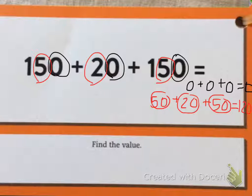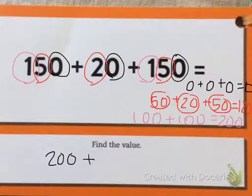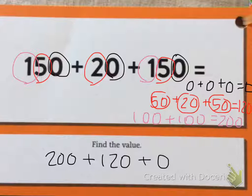Now let's look at the hundreds place. 100 and 100. 100 plus 100 equals 200. So our new equation is 200 plus 120 plus zero.